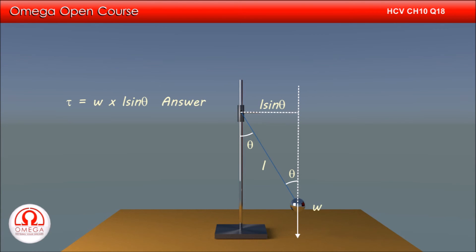As you can see, when the bob is at its lowest position, the line of action of force passes through the point of suspension. Thus for torque to be zero, the bob must be at its lowest position. This is the answer to the second part of the question.